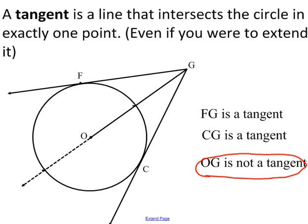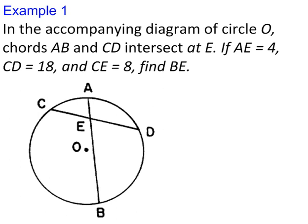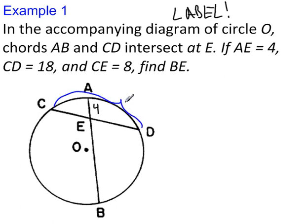Now let's work out some examples. Example one: in the accompanying diagram of circle O, chords AB and CD intersect at E. If AE equals 4, CD equals 18, and CE equals 8, find BE. So you always want to begin these problems by labeling. AE is 4, the whole chord CD is 18, and CE is 8.